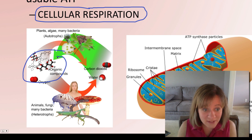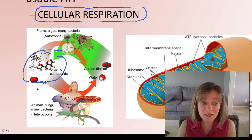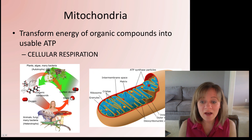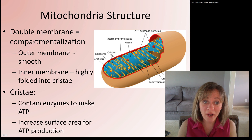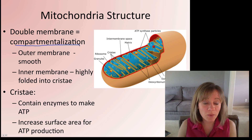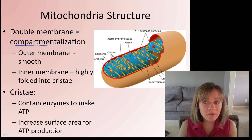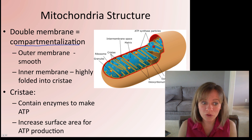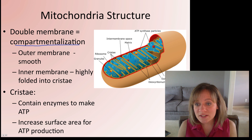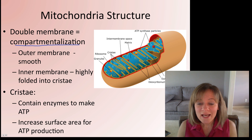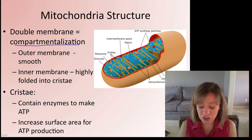The plants and autotrophs are creating the organic compounds we eat and the air we breathe. Looking at the structure of the mitochondria: it has a double membrane — we'll discuss the significance of that in the evolution unit — which functions to compartmentalize the different reactions. The smooth outer membrane and the highly folded inner membrane increase surface area so more reactions can take place in a smaller volume. These cristae contain enzymes to make ATP, and within the cristae is the matrix region, while the inner membrane space lies between the cristae and the inner membrane.